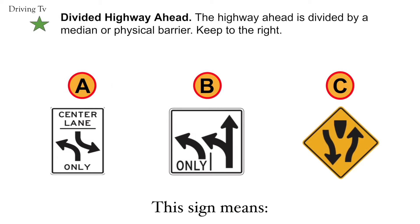Divided highway ahead. The highway ahead is divided by a median or physical barrier. Keep to the right. The correct answer is C. Divided highway ahead.